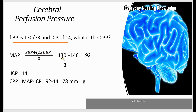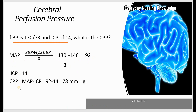Systolic is 130, and 2 times diastolic — diastolic is 73 — gives 146. So 130 plus 146 divided by 3 equals 92. Now you have a MAP of 92 and ICP of 14. So CPP equals MAP minus ICP, which is 92 minus 14, equal to 78 mmHg.